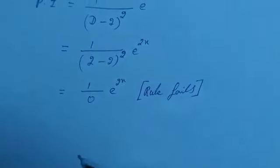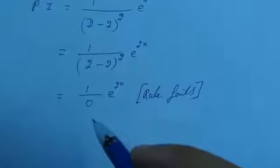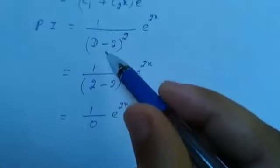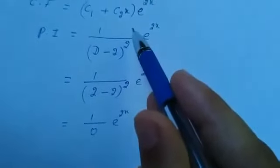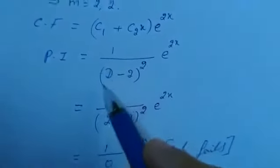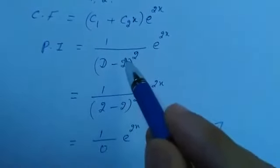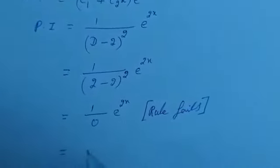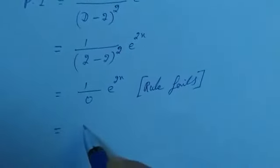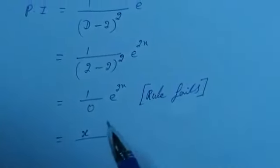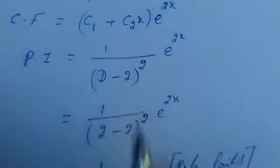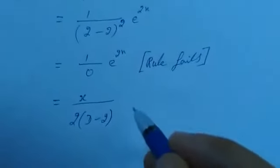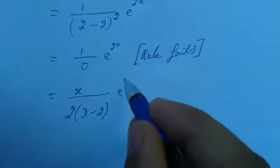When the rule fails, we proceed as follows: in the previous step, we multiply the numerator by x and differentiate the denominator with respect to D. So multiplying the numerator by x gives x, and differentiating the denominator with respect to D gives 2 into (D minus 2). So we get x by 2(D minus 2) into e raised to 2x.